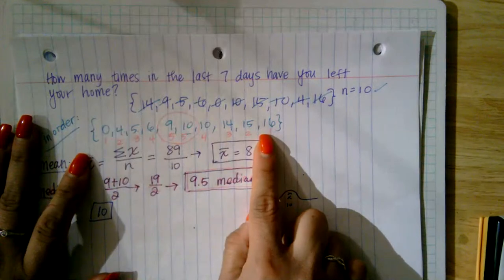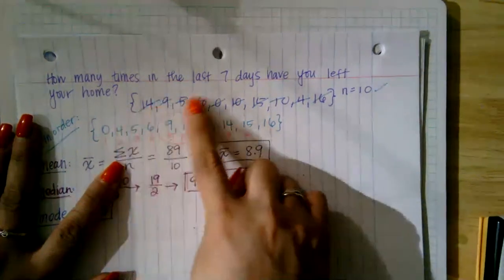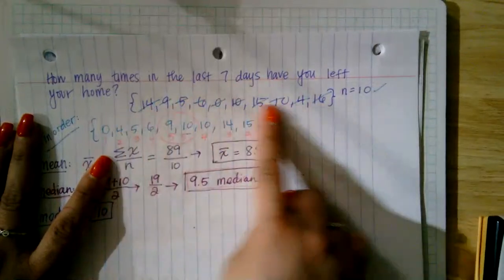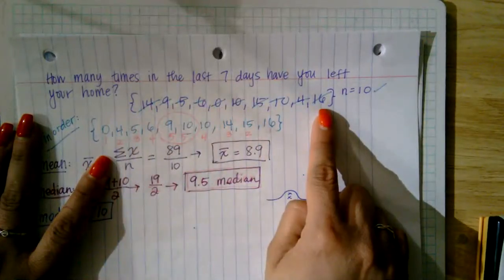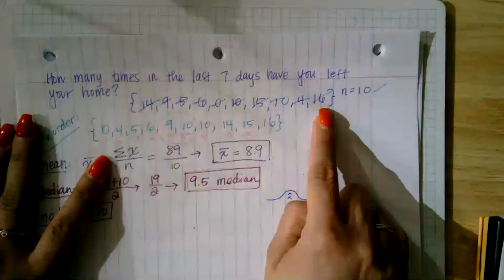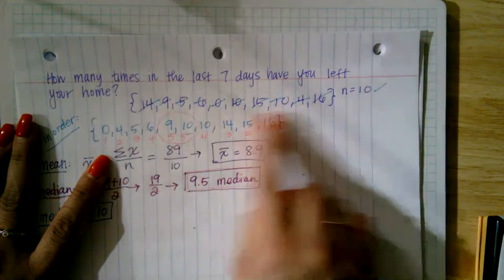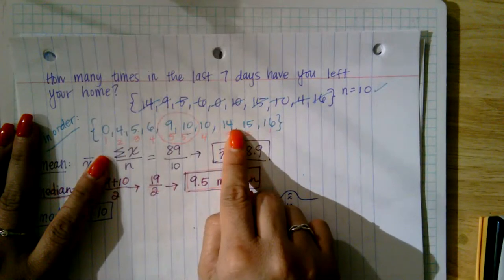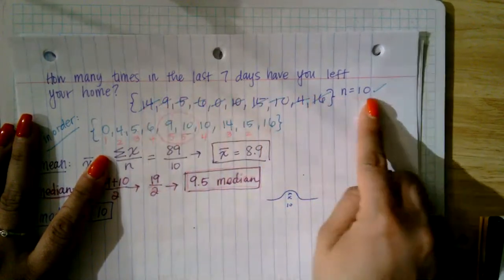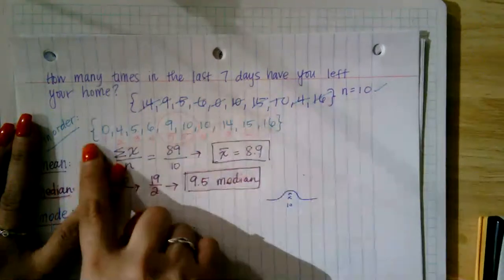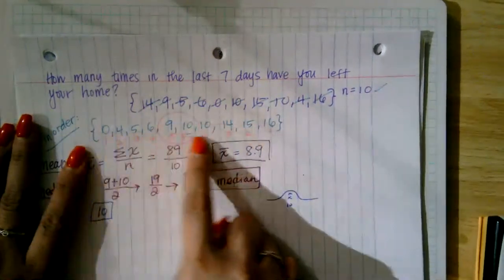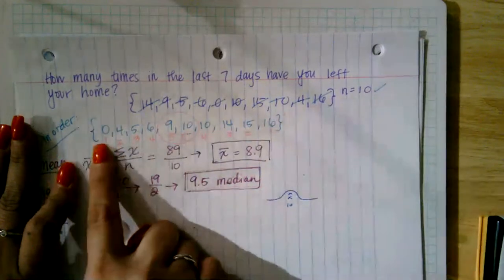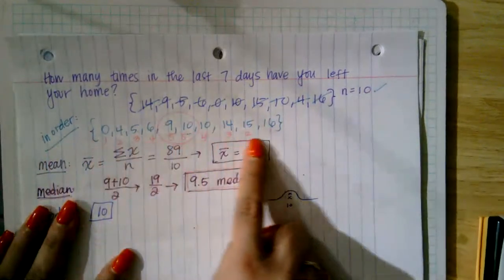My data set is now in order. Notice that I crossed values out as I wrote them here, to make sure I'm doing this correctly — I don't reproduce a number more than once or omit one by mistake. Those little slashes ensure accuracy, and the check mark confirms my data set count is maintained.